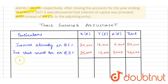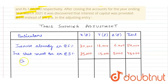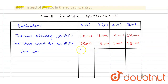Partners are over-credited. X is over-credited by rupees 5,000; Y by rupees 3,000; Z by rupees 1,000. Total over-credited amount is rupees 9,000.